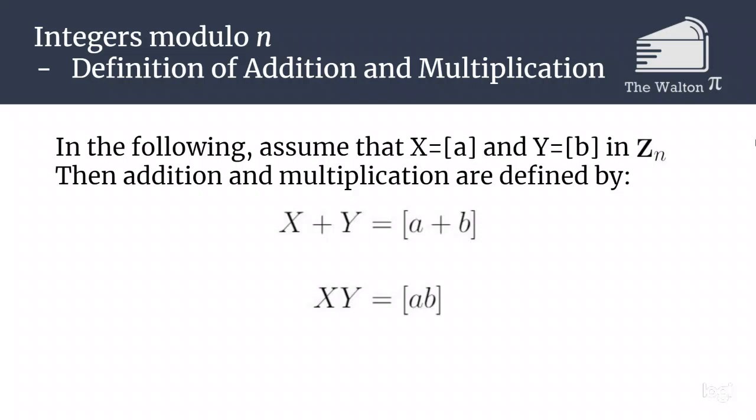Once we have defined the integers mod n, there is also addition and multiplication in the integers mod n. If x is the class of a and y is the class of b, then x plus y is the class of a plus b. And the class of x times the class of y is going to be the class of a times b.